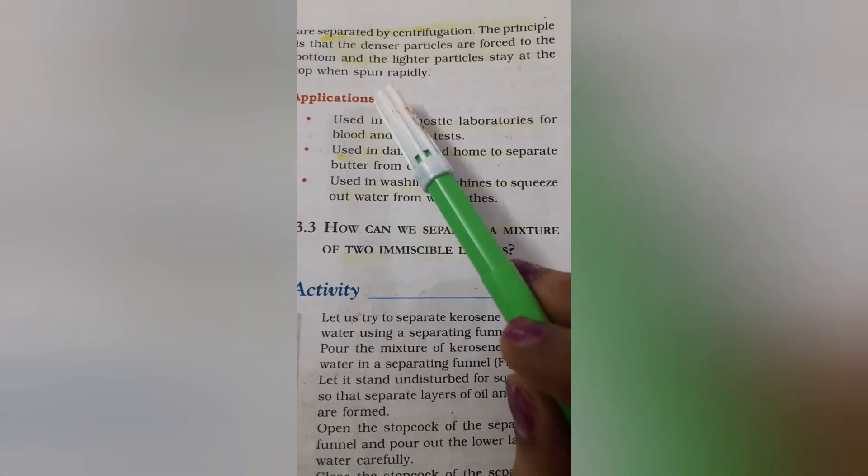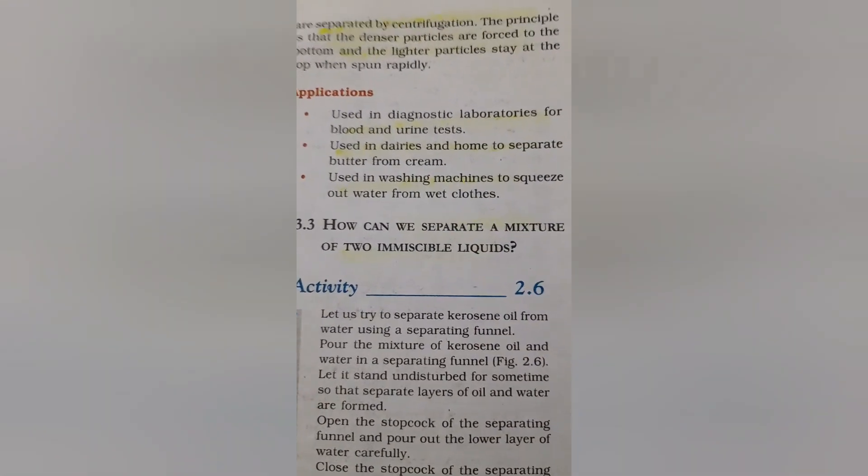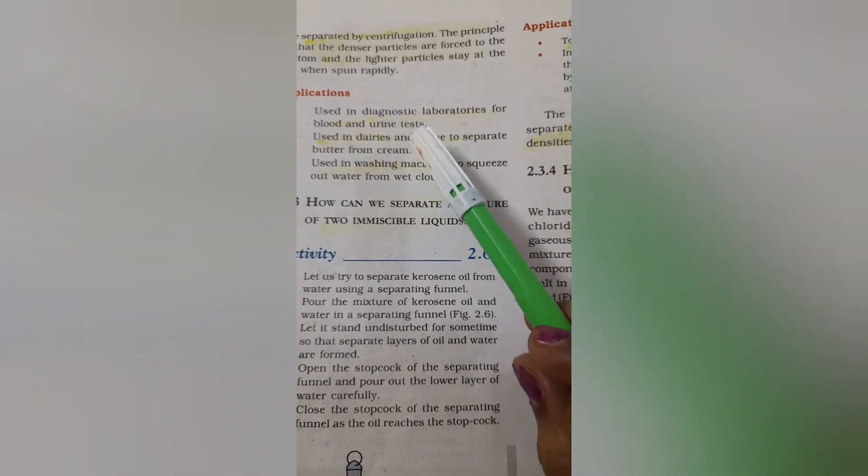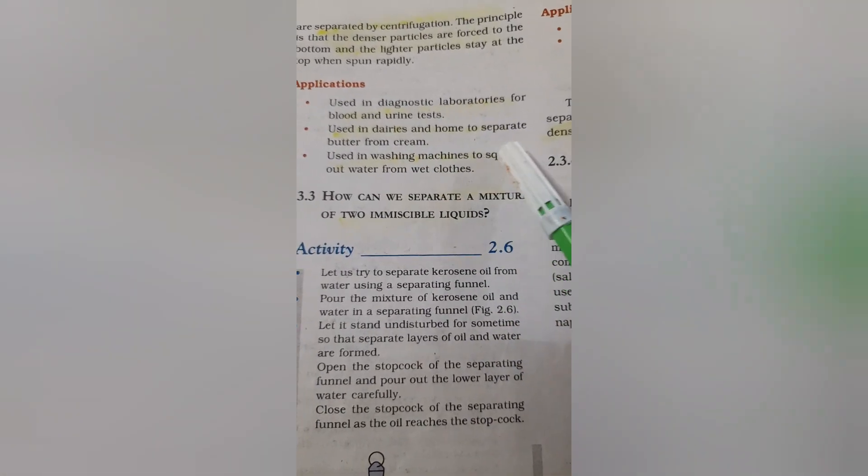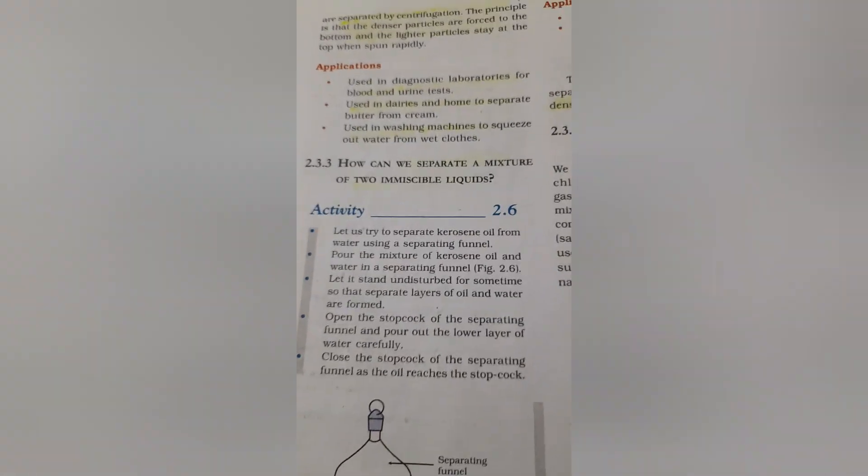Sometimes the solid particles in a liquid are very small and pass through filter paper, so for separating milk you use the process of centrifugation. The principle of centrifugation is that denser particles are forced to the bottom while lighter particles stay at the top when spun rapidly. This method is used in diagnostic laboratories for blood and urine tests, in dairies to separate butter from cream, and in washing machines to squeeze out water from wet clothes.